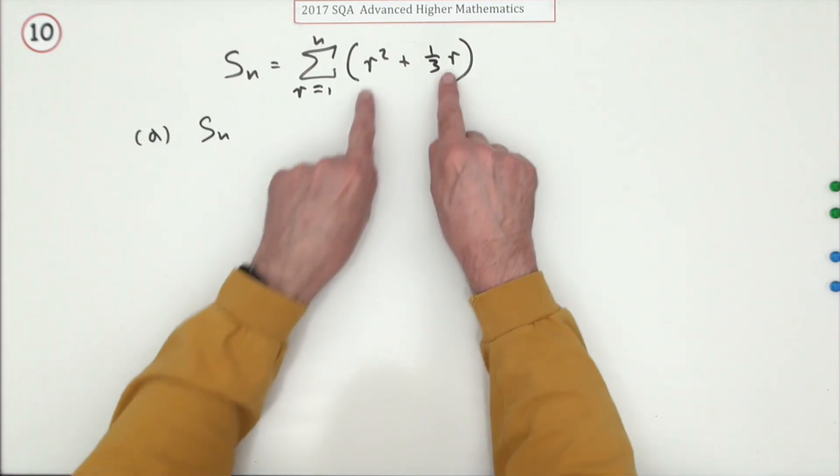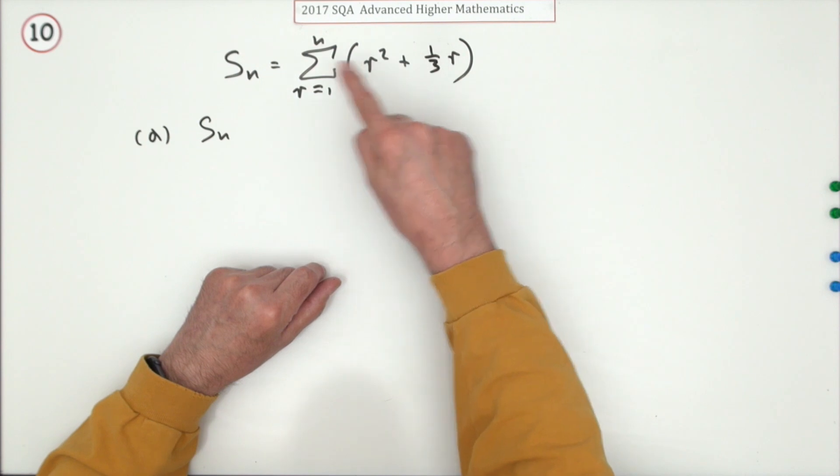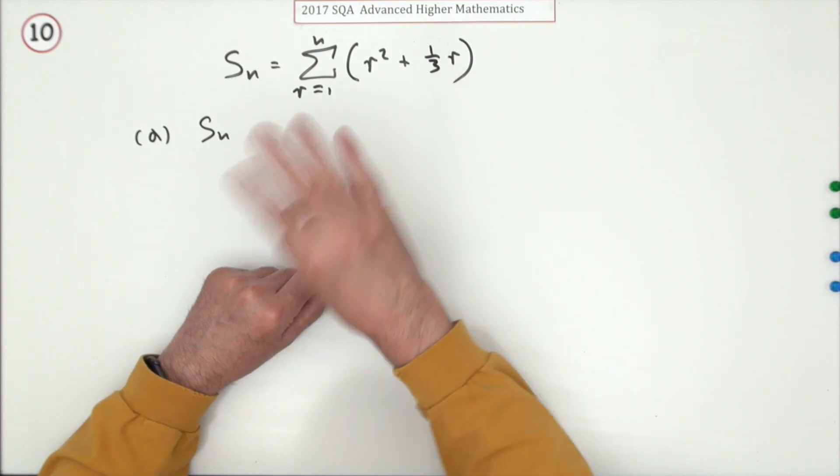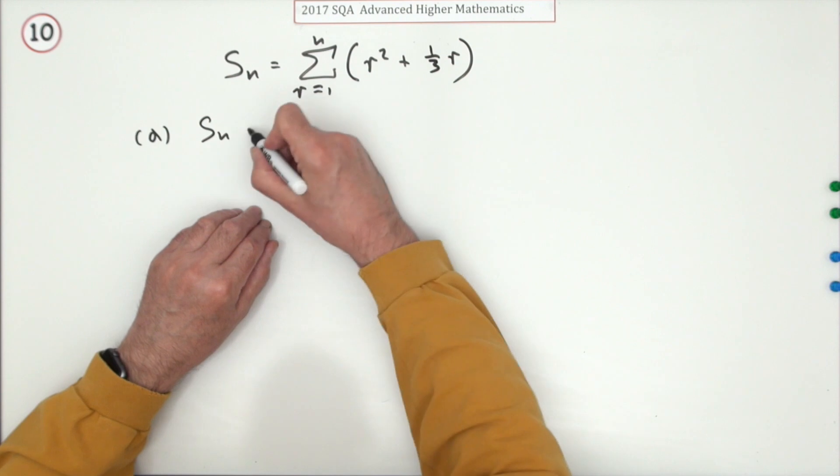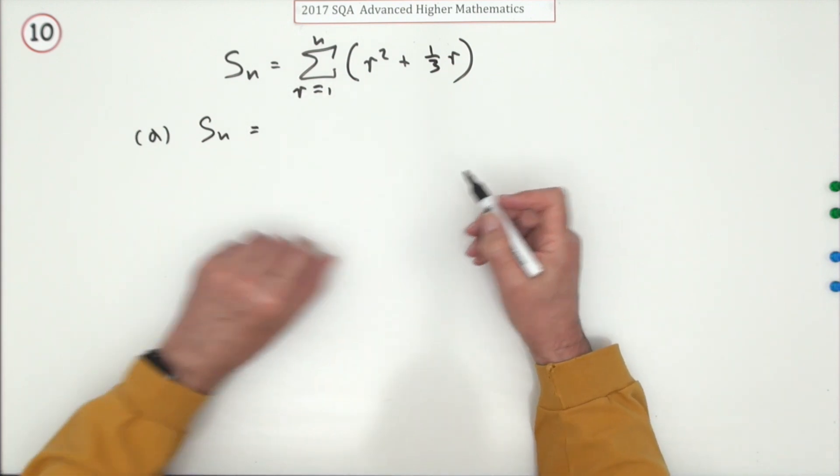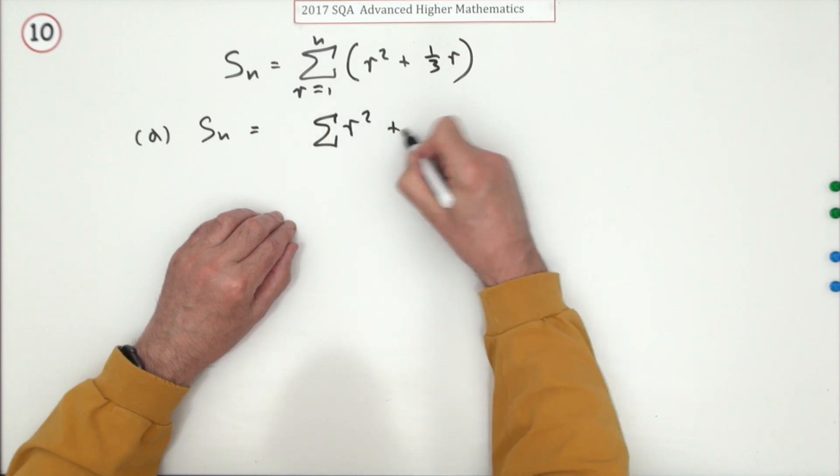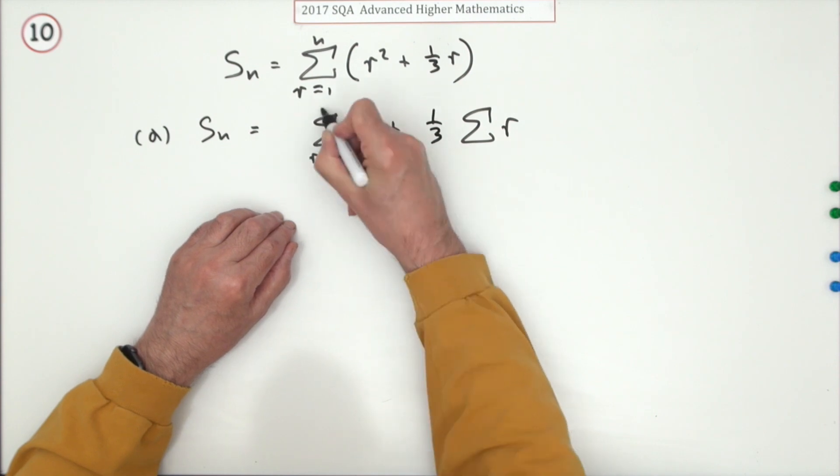Well, it used to be you had to know these - you had to know the summation for r, r squared, and r cubed. R squared was always the tricky one because it had those three parts in it. But you just look up the front now. So if you look up the front, first I've got to separate it, so I've got the summation of r squared plus a third of the summation of r. Now I've got to fill in all these tedious bits.